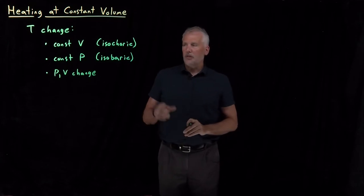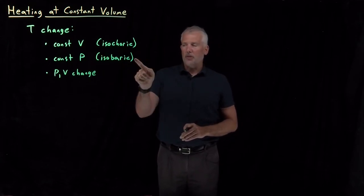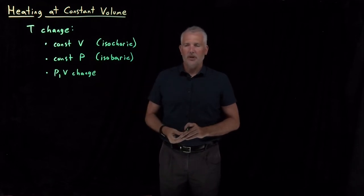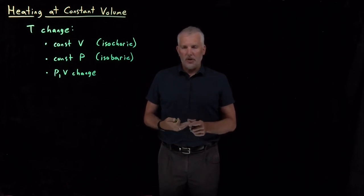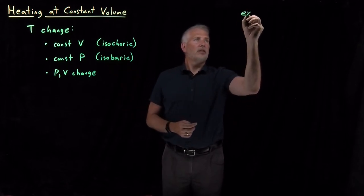But often, we restrict ourselves to either an isochoric process where we prevent the volume from changing, or an isobaric process where we prevent the pressure from changing. So we actually have everything we need to be able to calculate delta U and Q and W for temperature change processes. So let's consider an example.